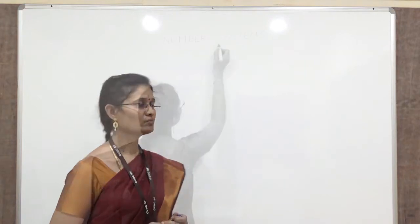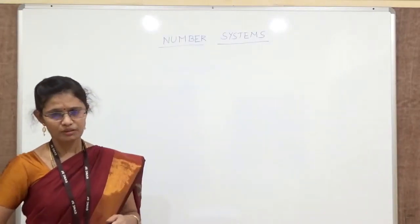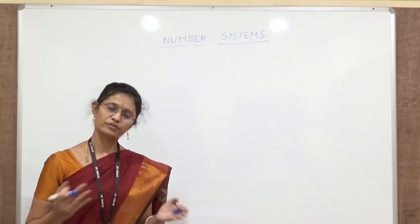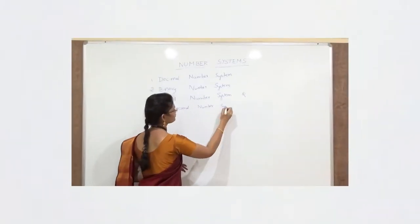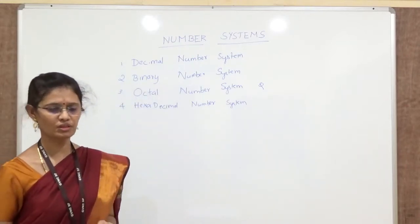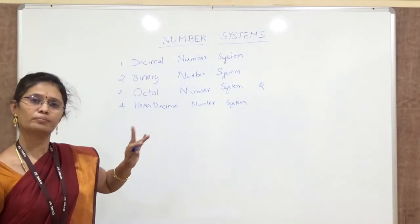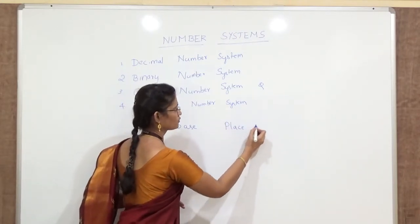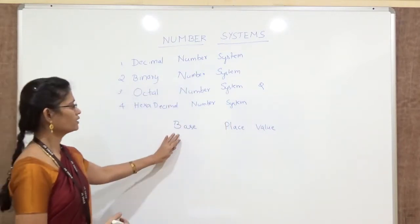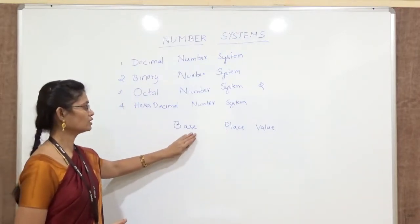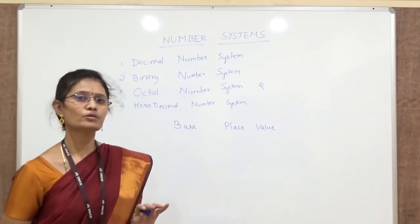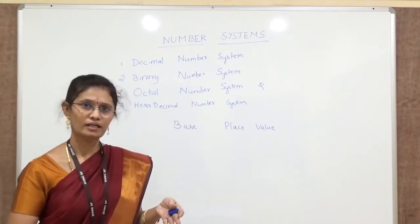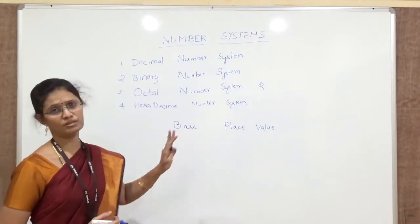Let us see how to solve number system problems. A number system is used to express numbers. There are different types, but the four most used are important. Each of these number systems depends on two factors: one is the base, and another one is the place value. The base refers to what symbols are used in the number system, and the place value refers to where exactly the digits are placed — for example, in the hundredths or thousandths place.